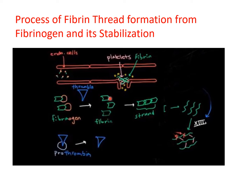The binding site of one fibrin molecule to another was covered by some amino acids, and when those amino acids are removed from fibrinogen by the action of the thrombin enzyme, fibrin monomers are present and they have a tendency to come together and make a strand or fiber. These fibrin monomers are now making a fibrin polymer, also called a fibrin fiber or fibrin strand.